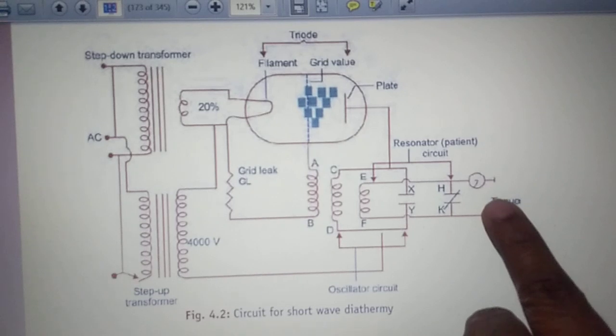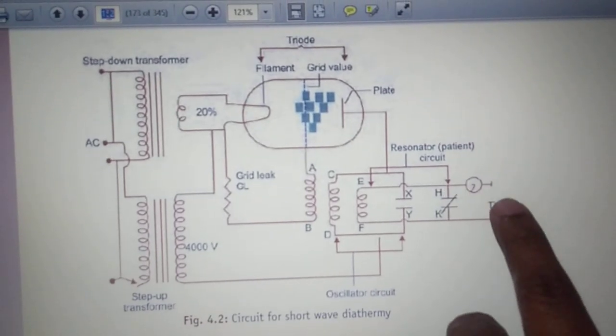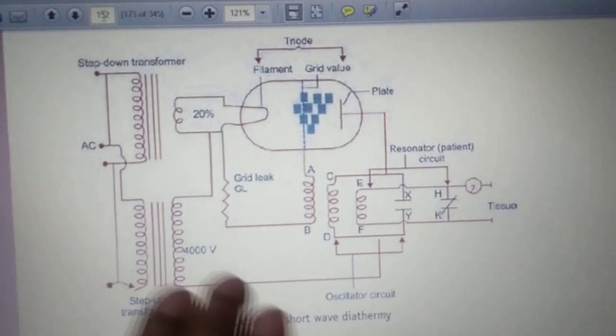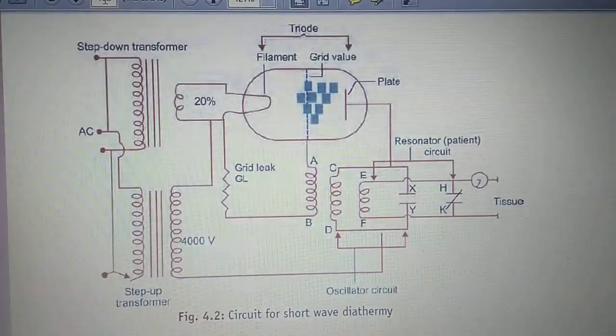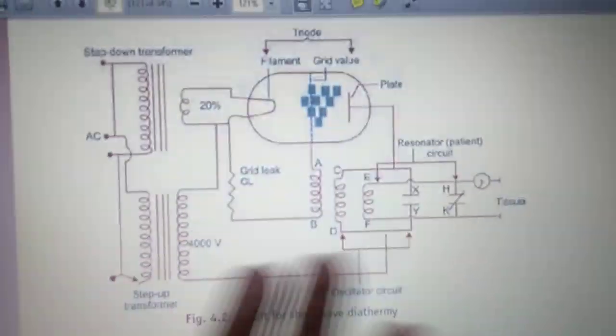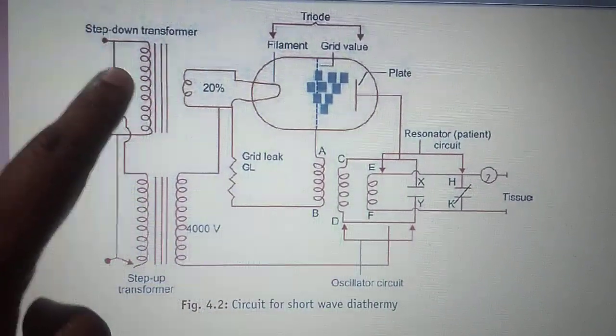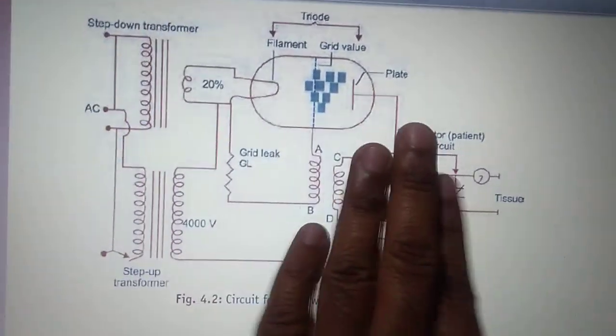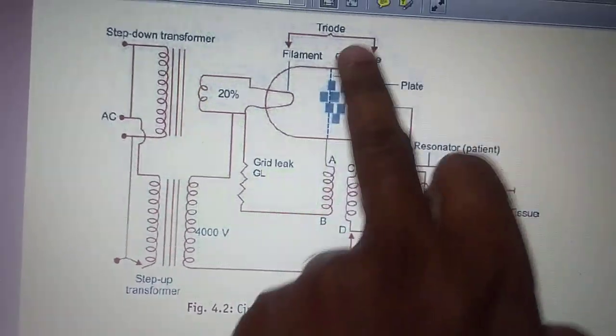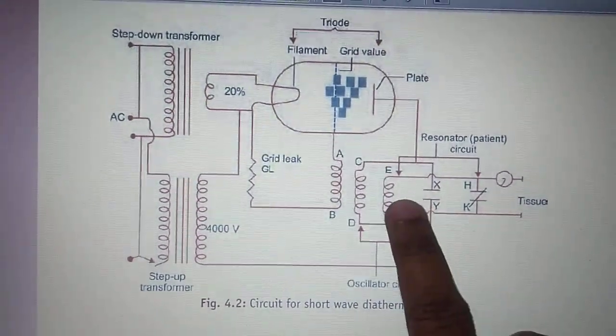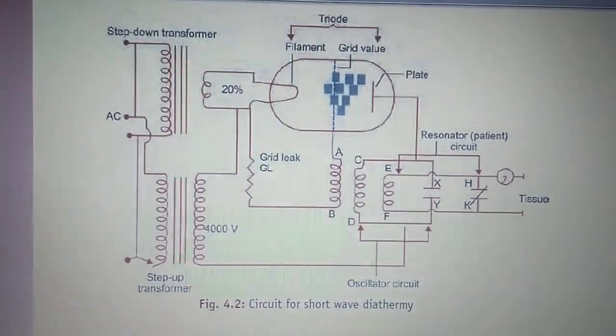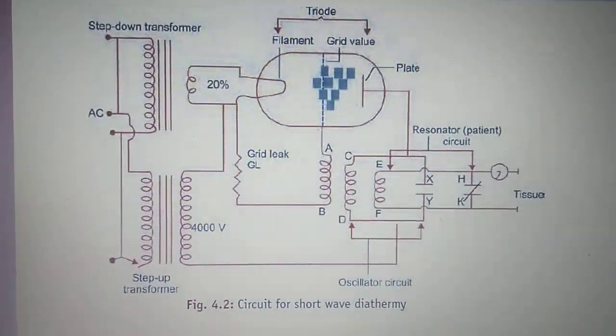Finally, in these two pads of the patient circuit, the tissue will be in between these two pads. So it's pretty easy, don't get complicated by looking at this diagram. The whole diagram can be understood as step-down transformer, step-up transformer connected to a grid triode filament, and two or three circuits. What are the roles of these circuits we will come to know in the next working principle class.